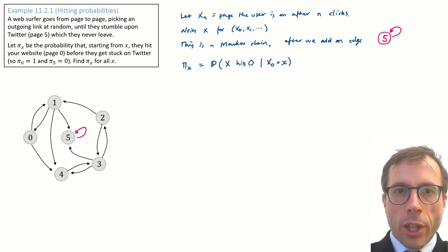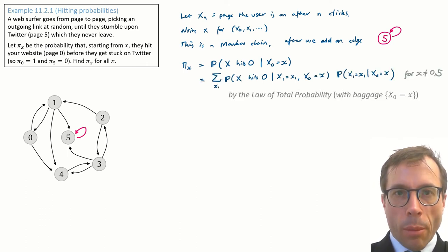Okay, let's write out the probability that we're trying to calculate. We want pi x, the probability that starting from x0 equals x, the Markov chain capital X eventually hits state 0. I'm going to use the law of total probability here to condition on x1, the same trick we used in the last example.